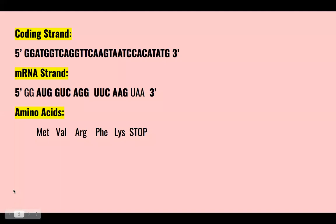I'll begin with the coding strand, which I have placed in the five prime to three prime direction. From our coding strand, we produce our mRNA strand, which is also read from the five prime to three prime direction. However, in the mRNA strand, all of the T's are replaced by U's.